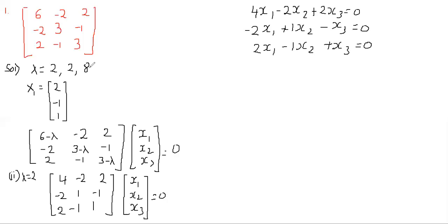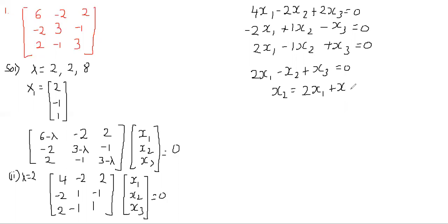Since all three equations are the same, we cannot use the previous method. Instead, we take just one equation: 2x1 − x2 + x3 = 0. Rearranging, we move x2 to the other side: x2 = 2x1 + x3. In this case we can assume any one of the values as 0. To make it simpler, let us assume x1 = 0.